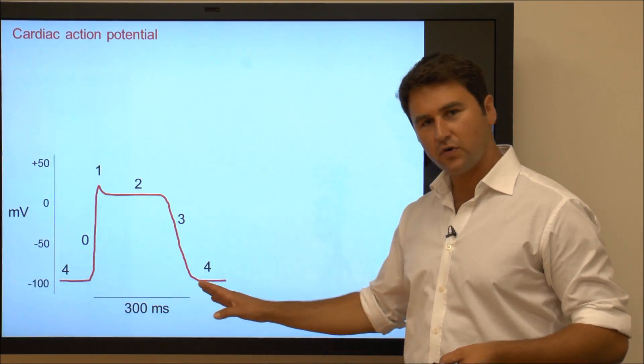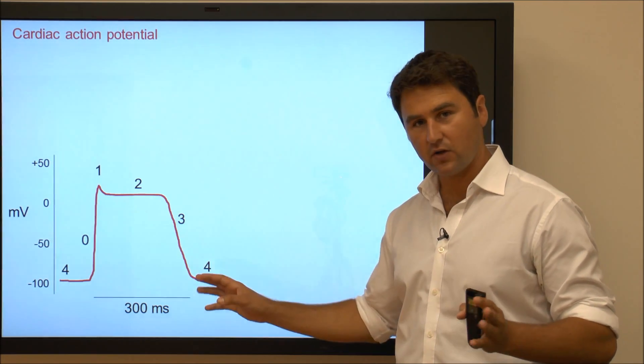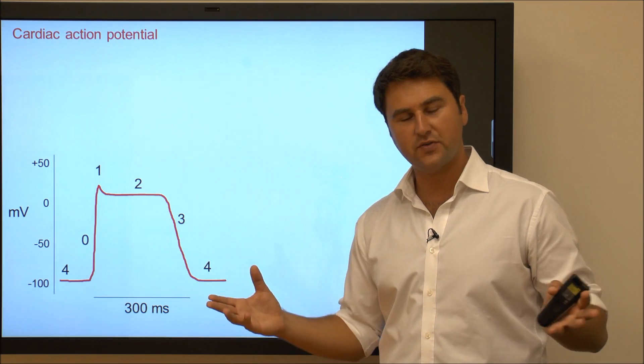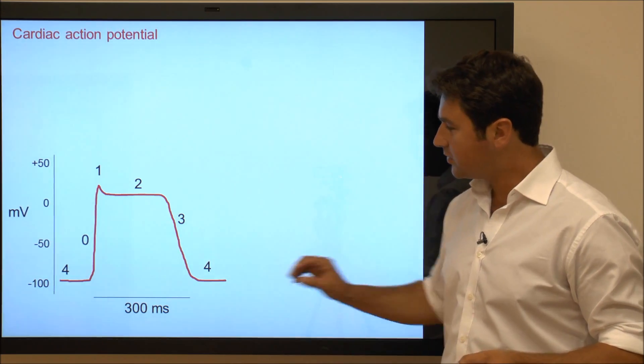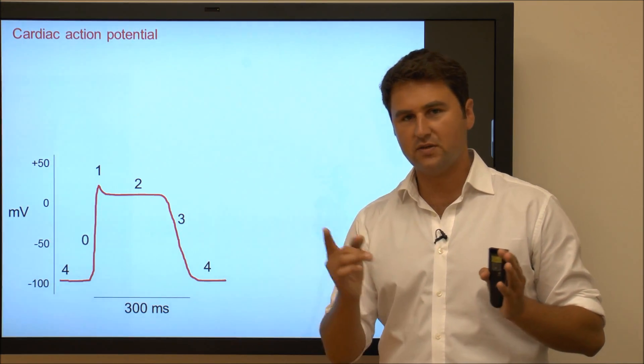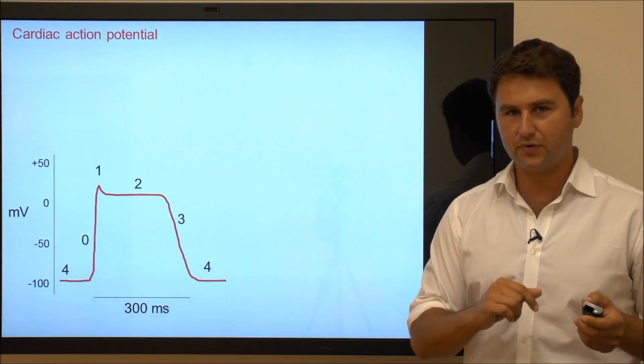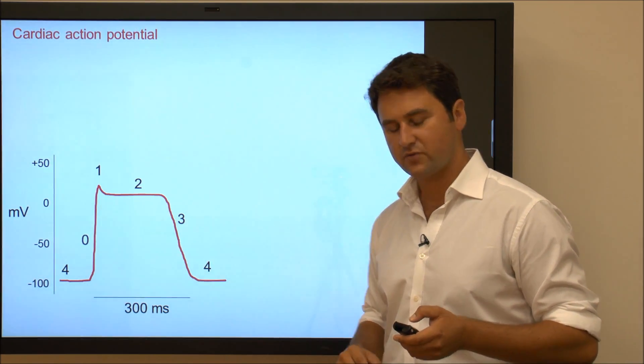I think it's important to know that the length of this action potential is very long, particularly when compared to, for example, neuronal action potential. But the reason for that is so that the heart contraction needs to be regulated so that the heart doesn't go into re-entrant arrhythmias. So this length really protects it against re-entrant arrhythmias.